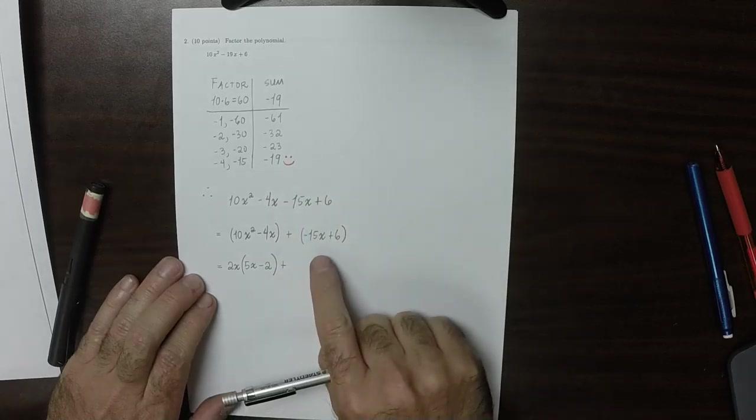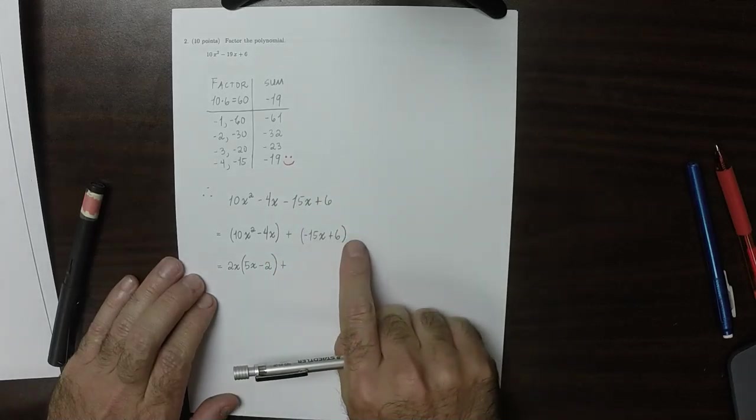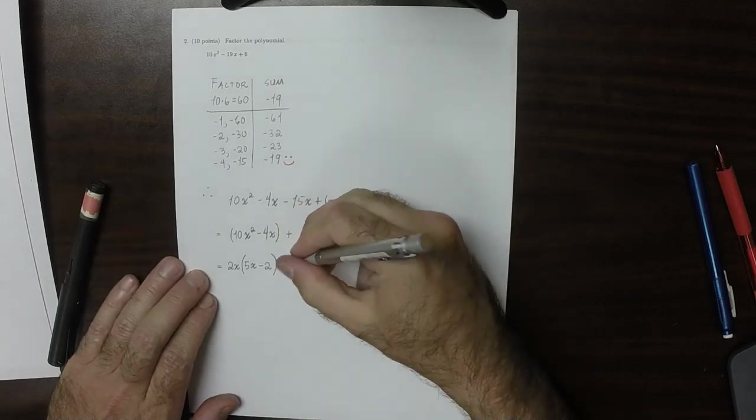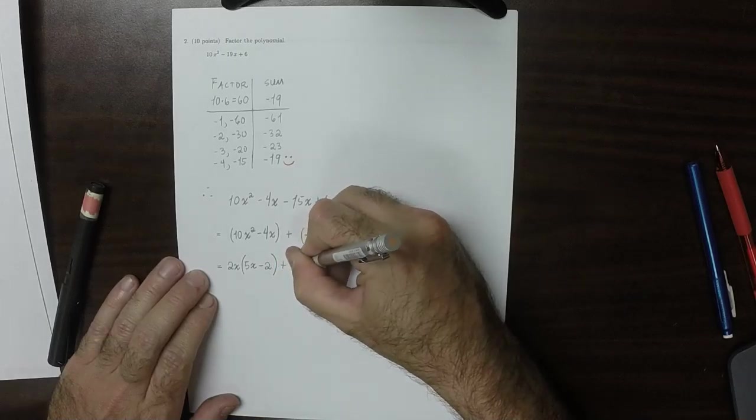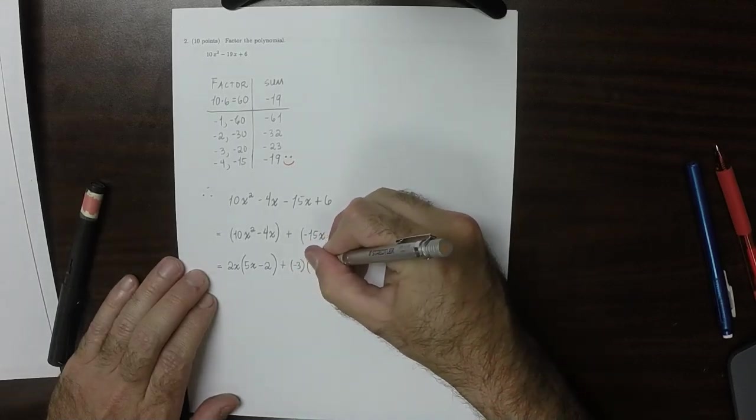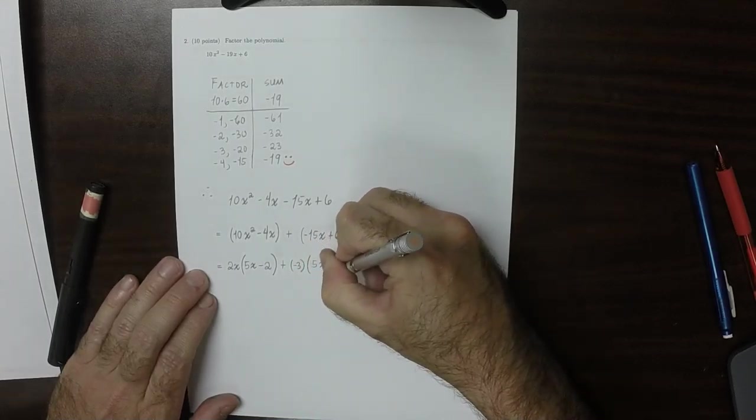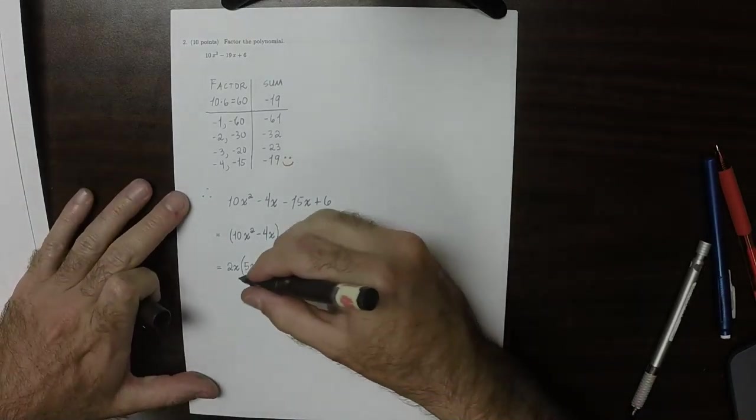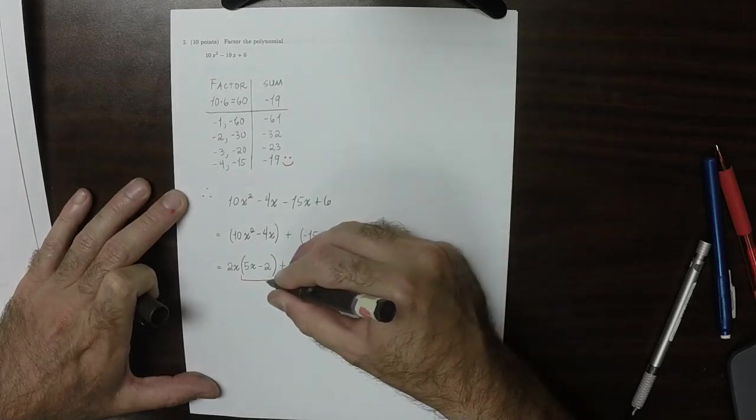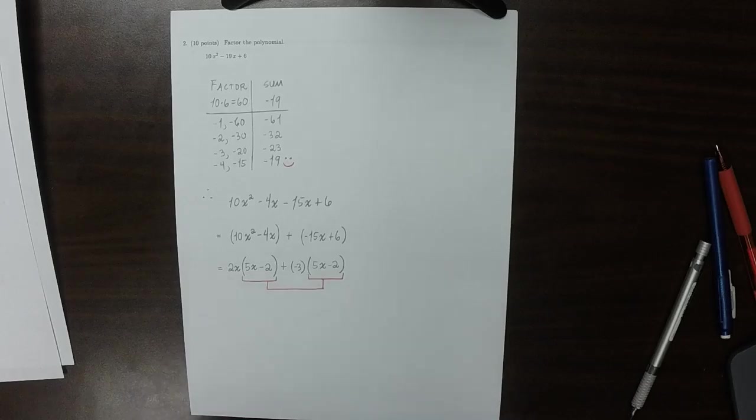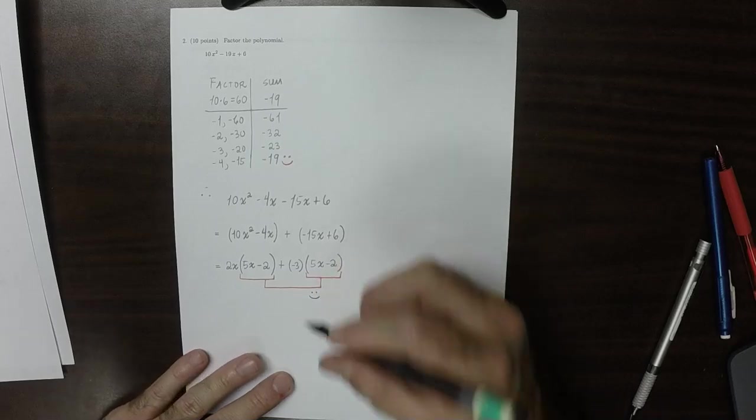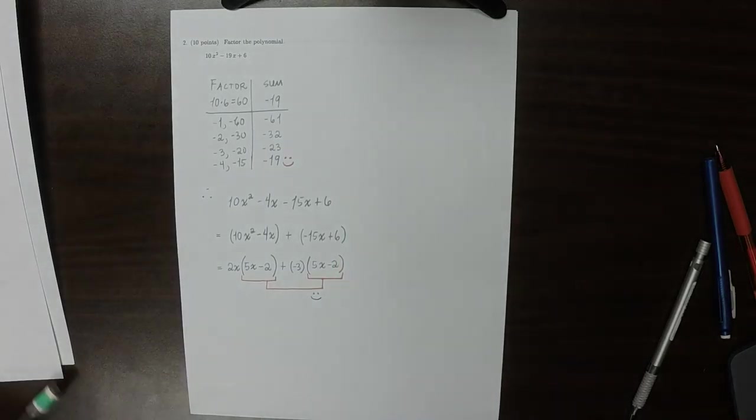Plus... So now the greatest common factor here will be negative 3. So we'll take that negative out. So plus negative 3. And then when you factor out negative 3, this is a 5x minus 2. And then also, so notice, that this is the same as this. Now we are so happy about that, because that indicates that probably on the right step.